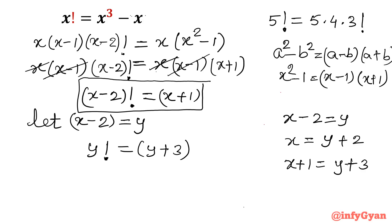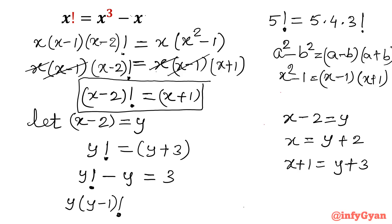Now take y to the left side — subtract y from both sides. So the equation becomes y factorial minus y is equal to 3.